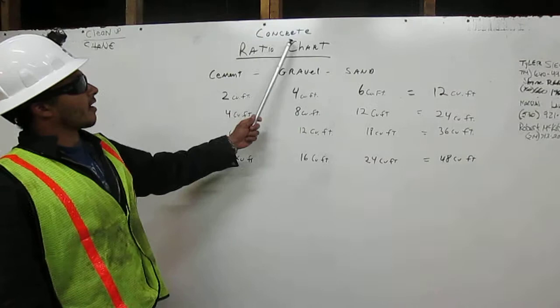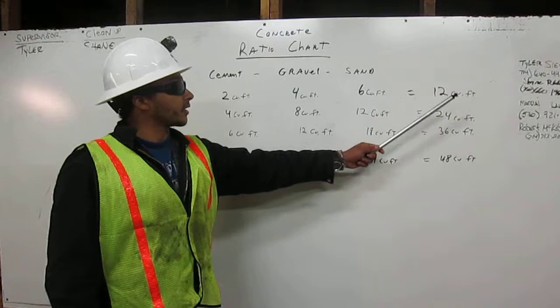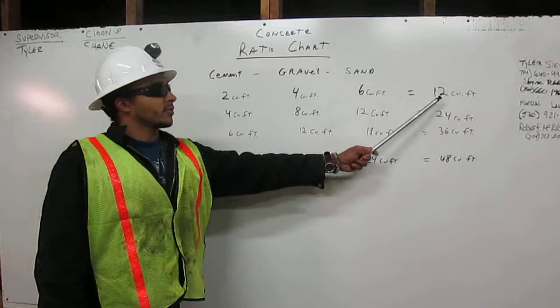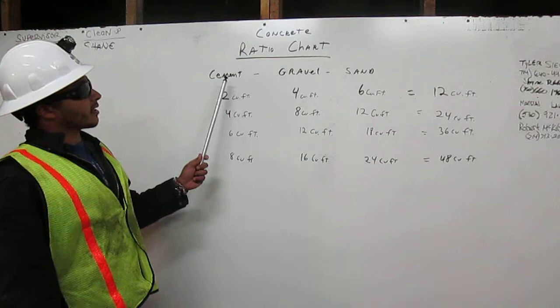To make 12 cubic feet of concrete, we're going to mix together cement, gravel, and sand. For 12 cubic feet of concrete, we mix 2 cubic feet of cement, 4 cubic feet of gravel, and 6 cubic feet of sand.